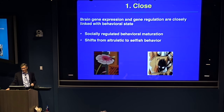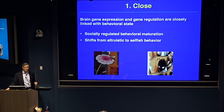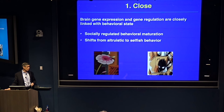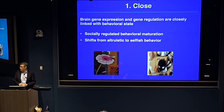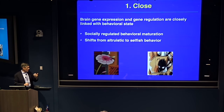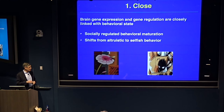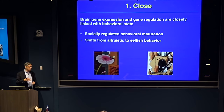The second behavioral context involves what happens when a honeybee colony loses its queen and workers are unable to rear a replacement. Some workers develop ovaries, usually inhibited by the queen and social structure. Once they develop ovaries, some change their approach to life, engaging in much less cooperative behavior and more selfish behavior — laying eggs.